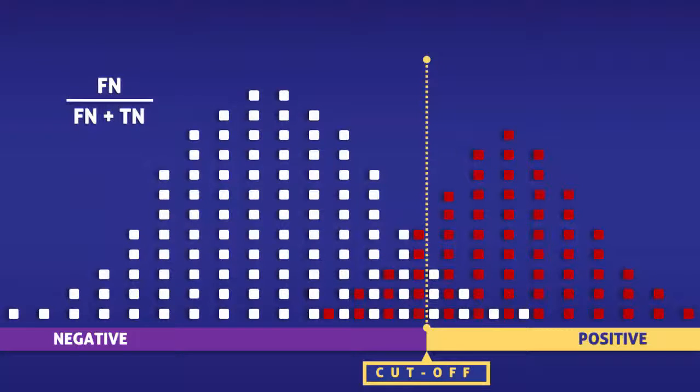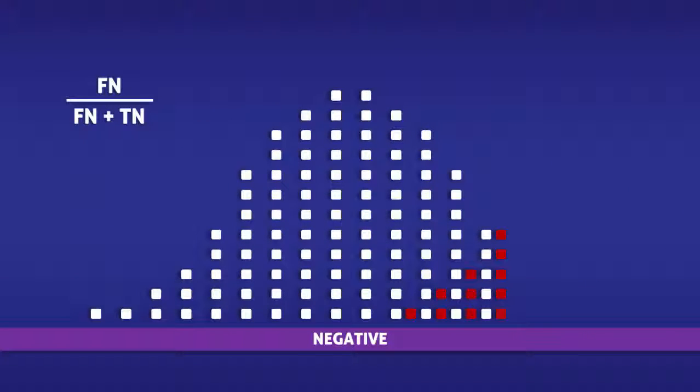Since the false emission rate only takes into consideration people who tested negative, we are going to focus on the squares to the left of the yellow line.